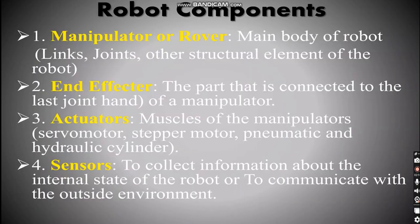As you can see, there are two types of domestic robots. The robot components that we have are manipulator or rover, end effector, actuators, and sensors.